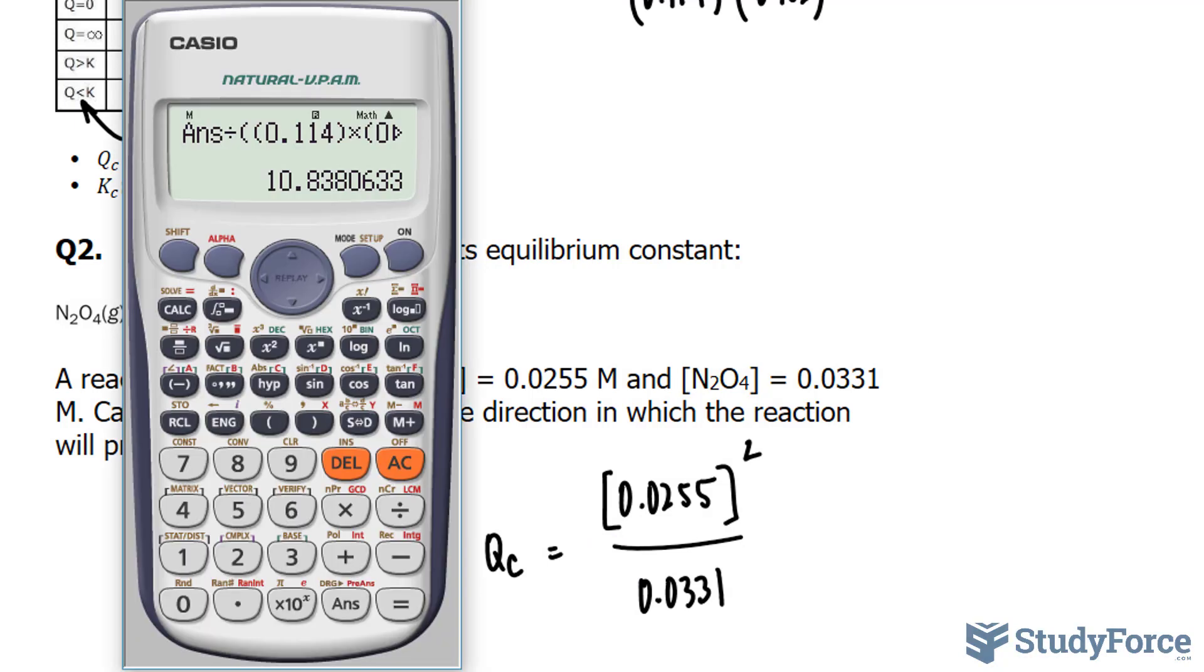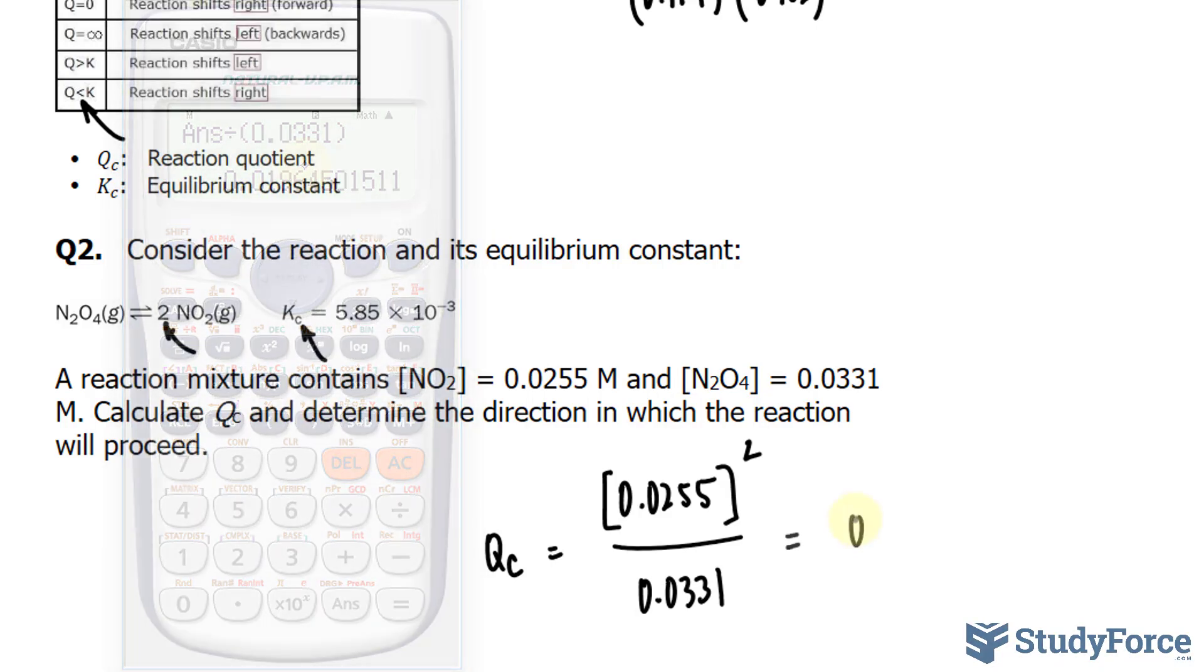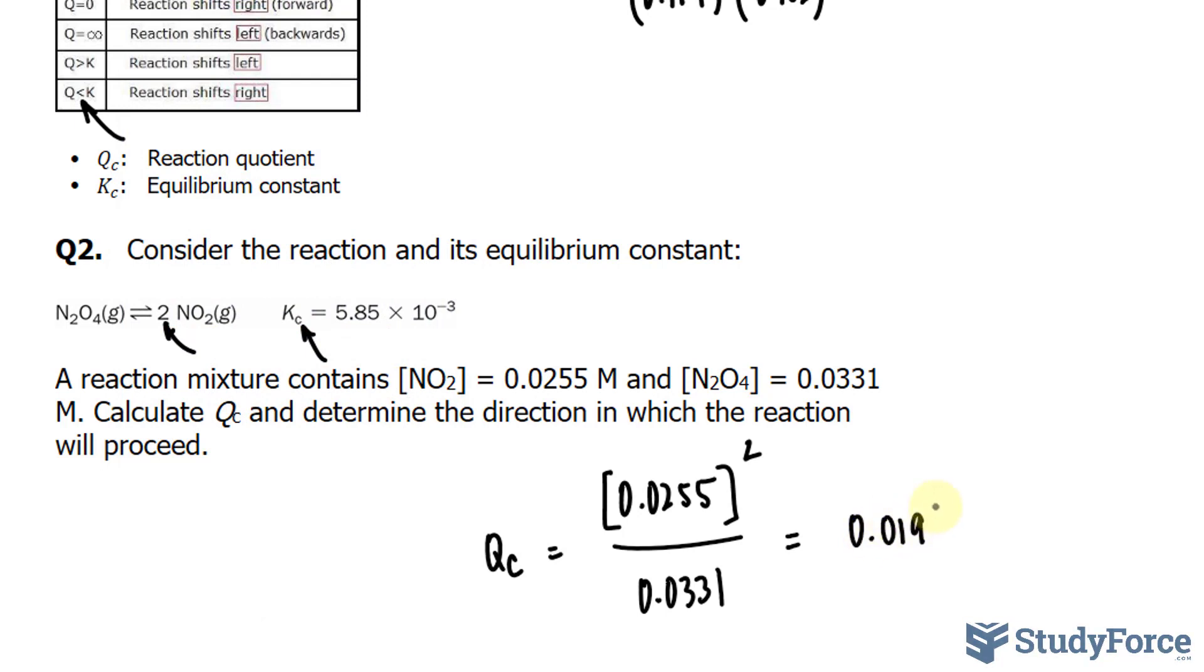We'll calculate this. 0.0255 raised to the power of 2, divided by 0.0331, and to three significant figures, we get 0.0196.